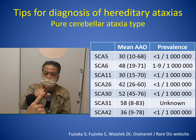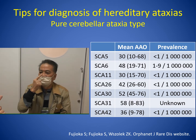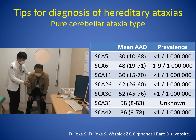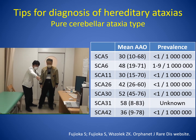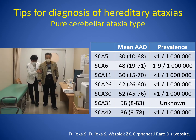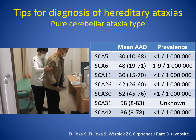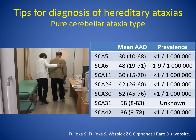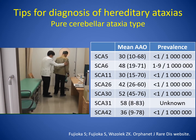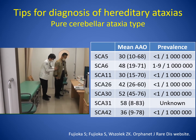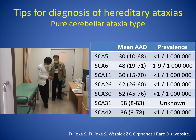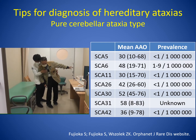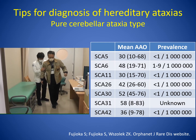Hereditary ataxias presenting with pure cerebellar ataxia generally include SCA 5, 6, 11, 26, 30, 31, and 42. The prevalence is as shown in this table; however, it depends on geographical zone. For example, SCA 31 is common in Japan. This SCA 31 patient presents with slowly progressive pure cerebellar ataxia, with no other neurological symptoms accompanied.